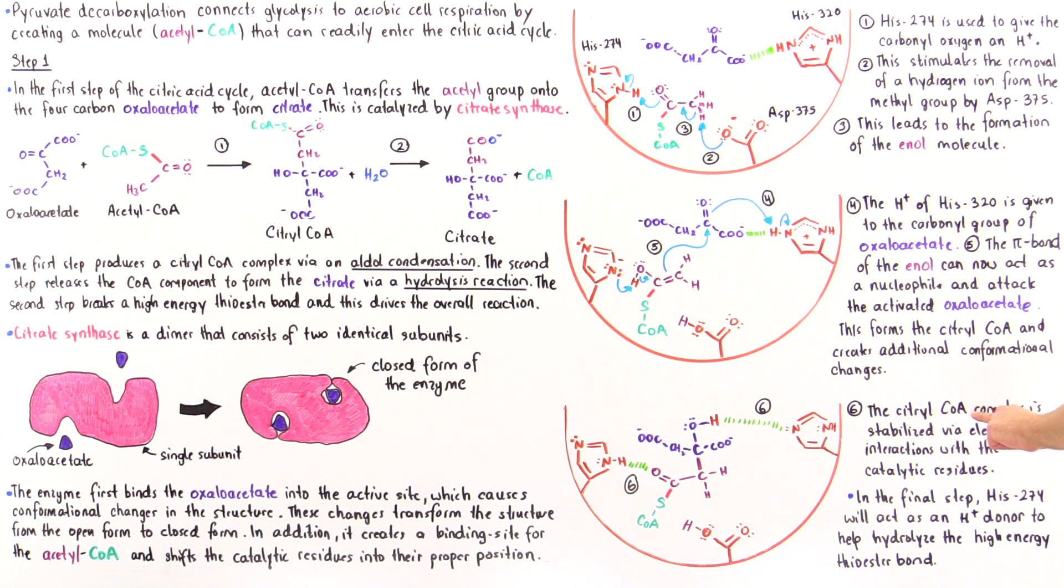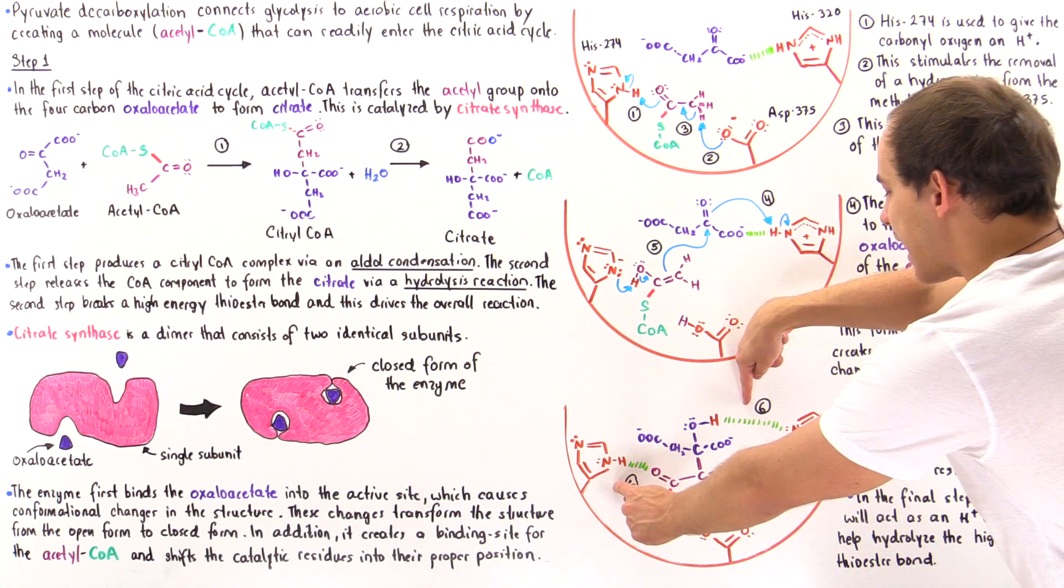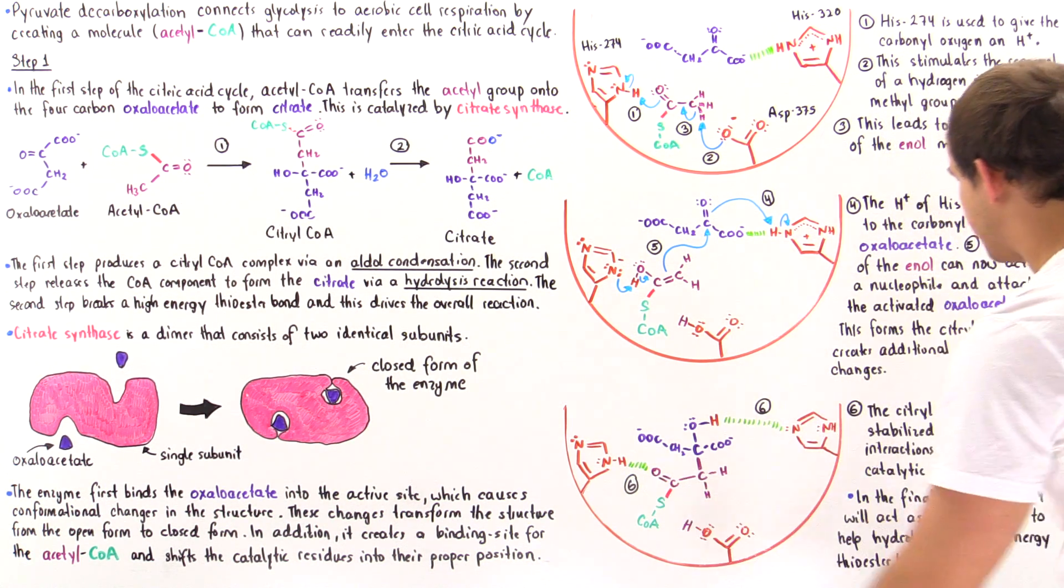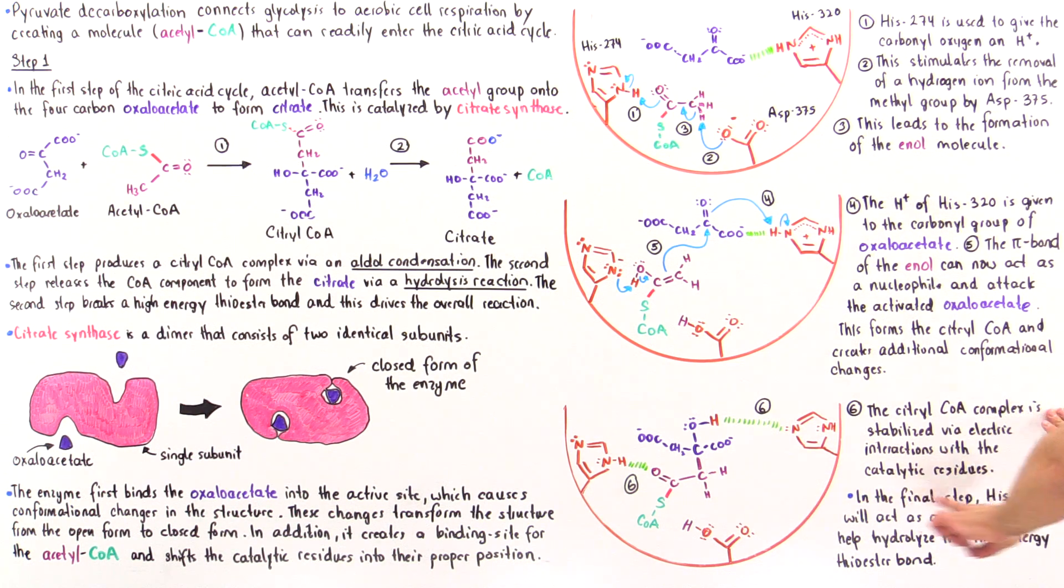So the citryl coenzyme A complex is stabilized via these interactions shown in this region here. And in the final step, which is not shown in the diagram,